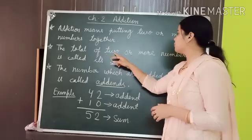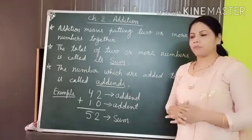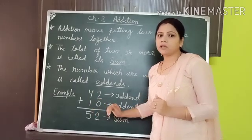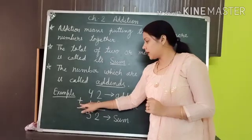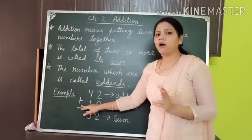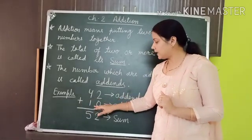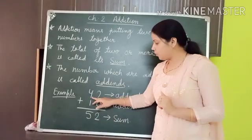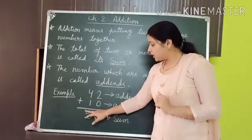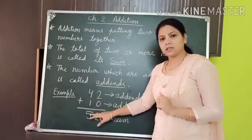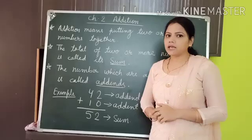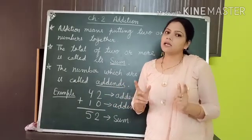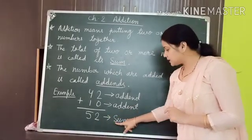The second fact is: the total of 2 or more numbers is called its sum. As you can see, I have written 2 numbers: 42 and 10. I have added them using the plus sign, which is the symbol of Addition. 2 plus 0 is 2, and 4 plus 1 is 5, so the result is 52. This total number that we get after adding 2 or more numbers is known as the sum.